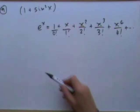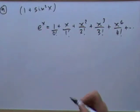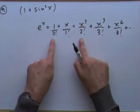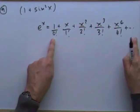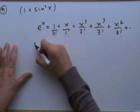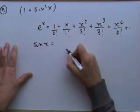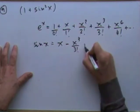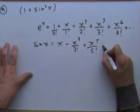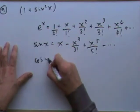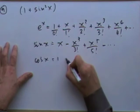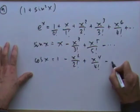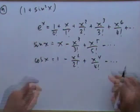Taking the odd terms gives the cosine and the even terms give the sine — or the other way around. So sin x = x - x³/3! + x⁵/5! - ··· and cos x = 1 - x²/2! + x⁴/4! - ··· Remember e^x and you get sin and cos straight from it.